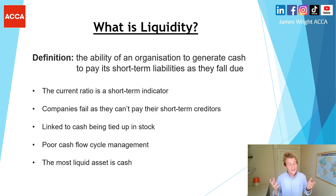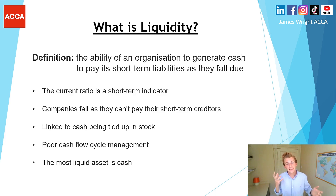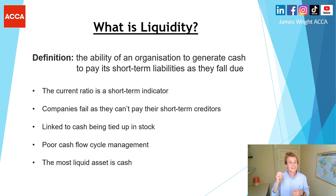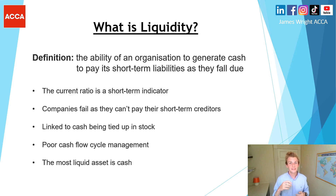If companies can't pay their short-term creditors they could fall into liquidation. This could be due to stock being tied up, not getting paid by trade receivables, or not enough cash in the business — poor cash flow cycle management is one of the ways a business could lead to bankruptcy. A key point: the most liquid asset on a company's balance sheet is its actual cash, also referred to as cash and cash equivalents.